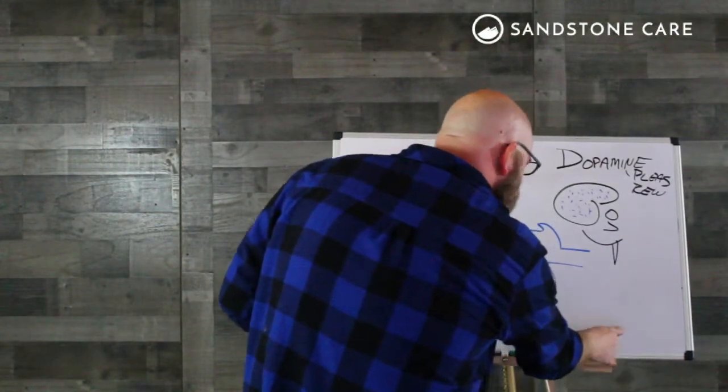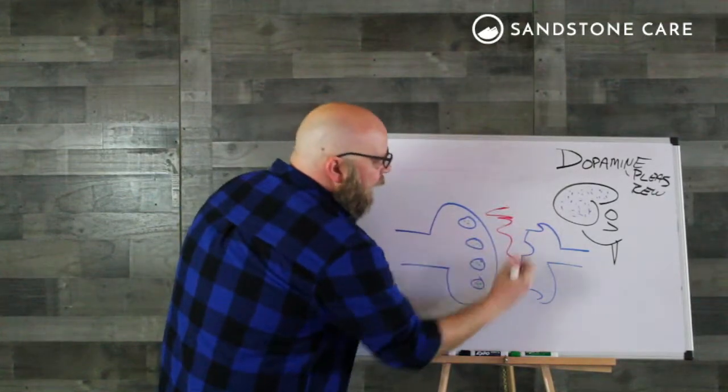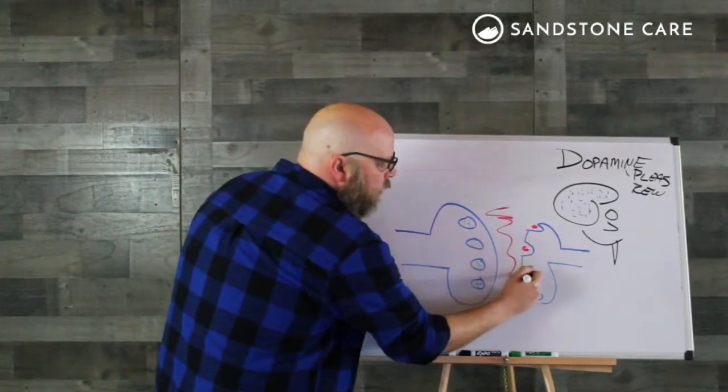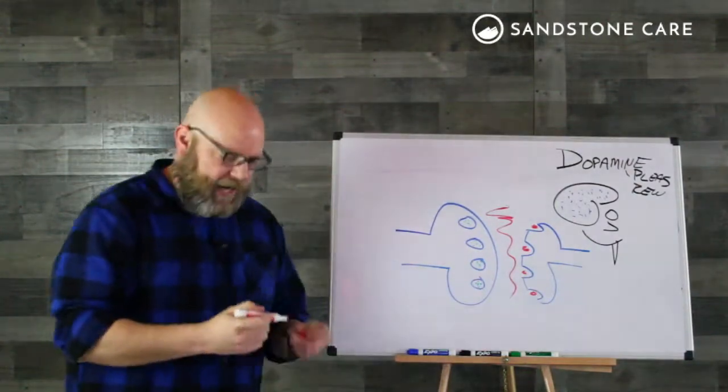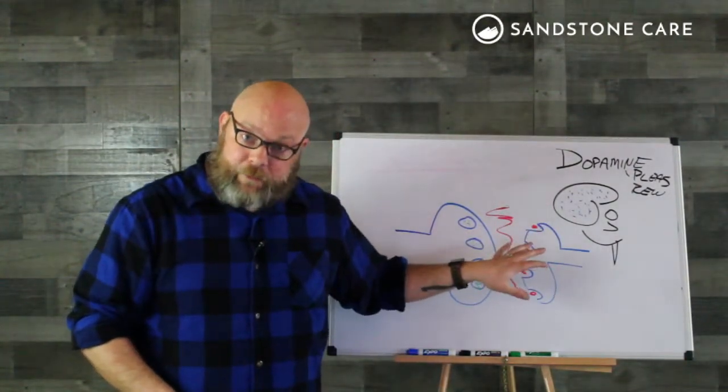When the drug—the fake neurotransmitter—floods the gap and plugs into the keyholes and goes billions of times down that chain, and the person is having the effect of that drug, the effect they may be looking for,